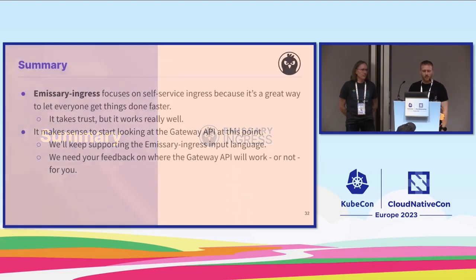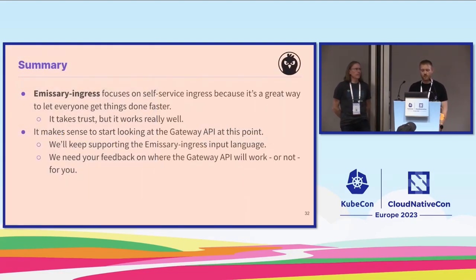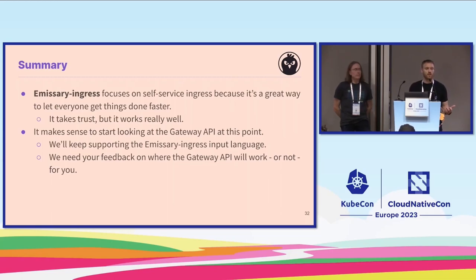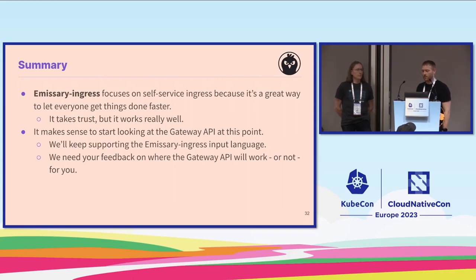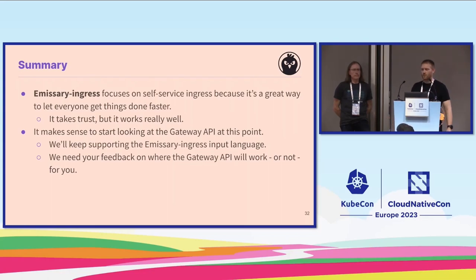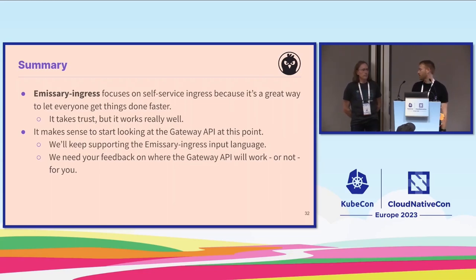In summary: Emissary Ingress focuses on self-service ingress because it's a great way to let everyone get things done faster. If you're new to Kubernetes and Emissary, it's definitely something to look at when setting up your teams — platform teams focus on platform, developers focus on their piece. It takes trust, but works really well. The Emissary input language — host, listeners, mappings — is here to stay for the foreseeable future, but we want to know how you'd like Gateway API to fit in. We need your feedback.